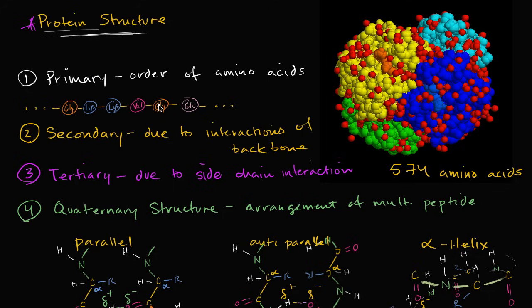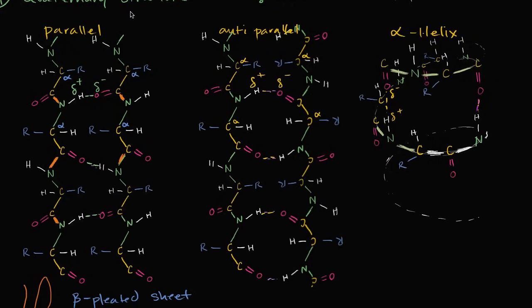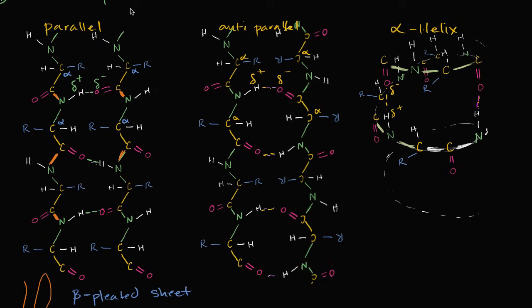But then from there, we can start thinking about how does it get shaped by thinking about the secondary structure. And secondary structure is all about interactions of the actual backbone. And we went into some depth in the overview video where we talked about some of the more typical secondary structures.